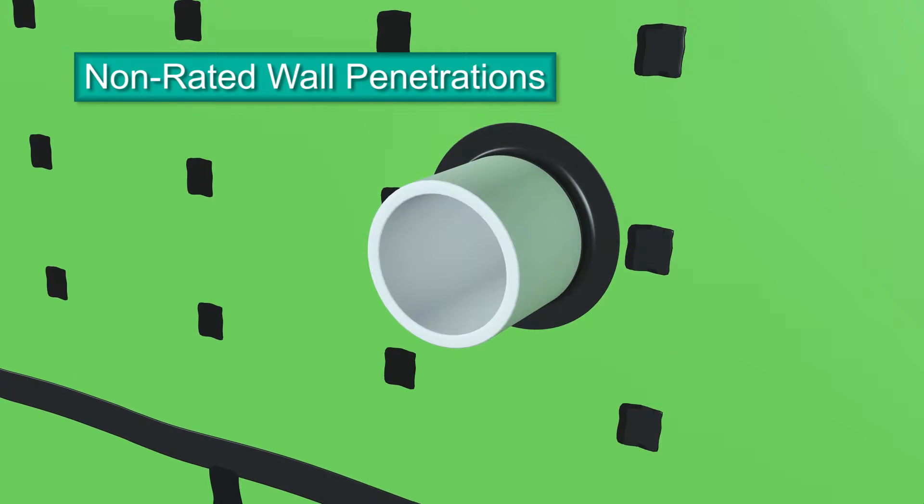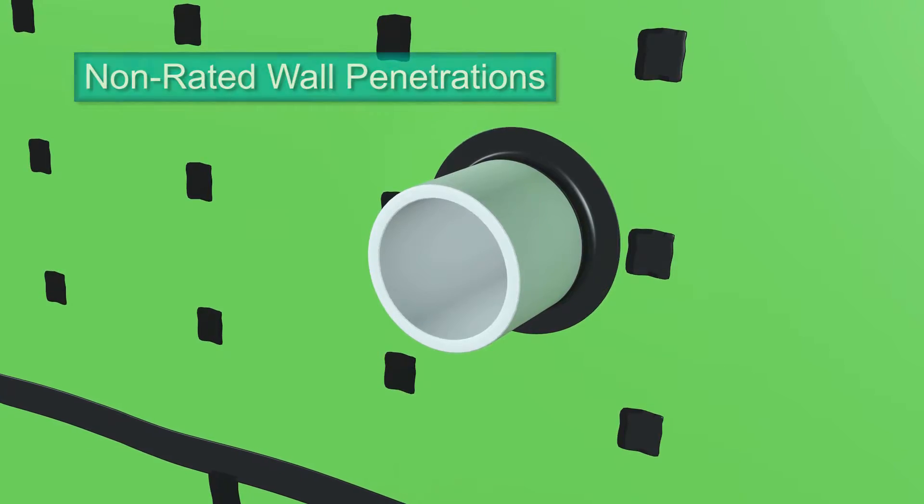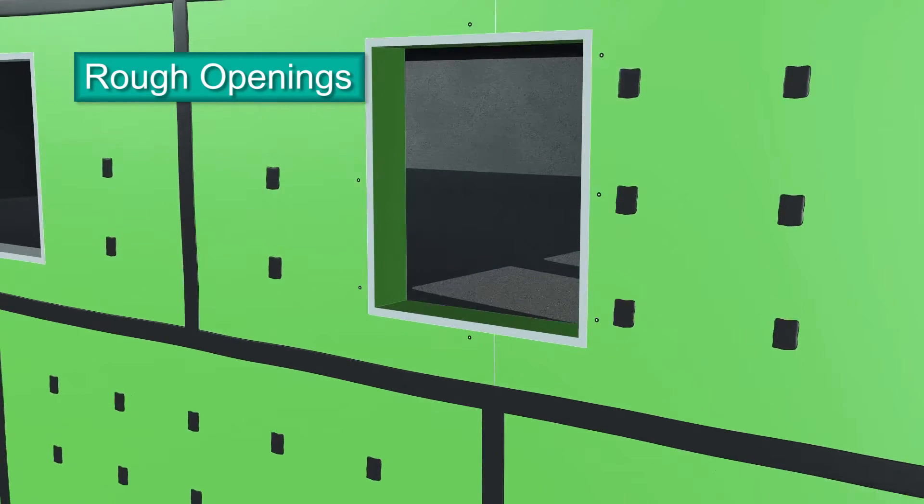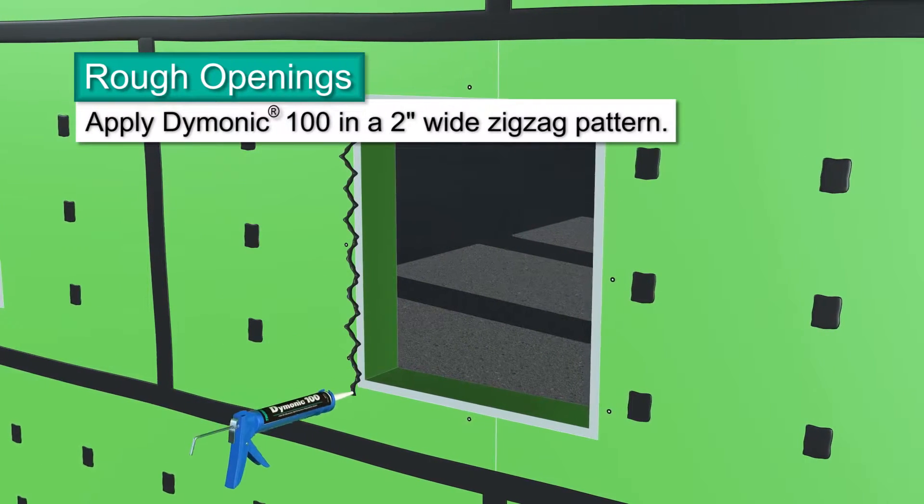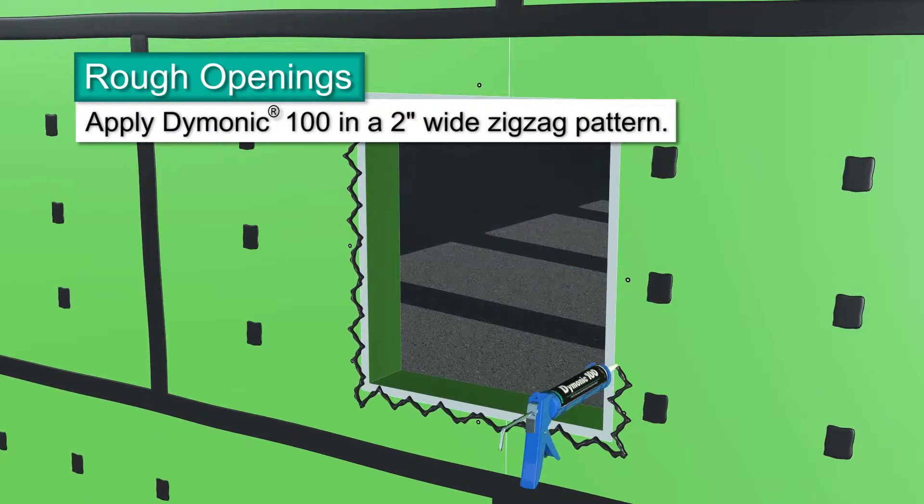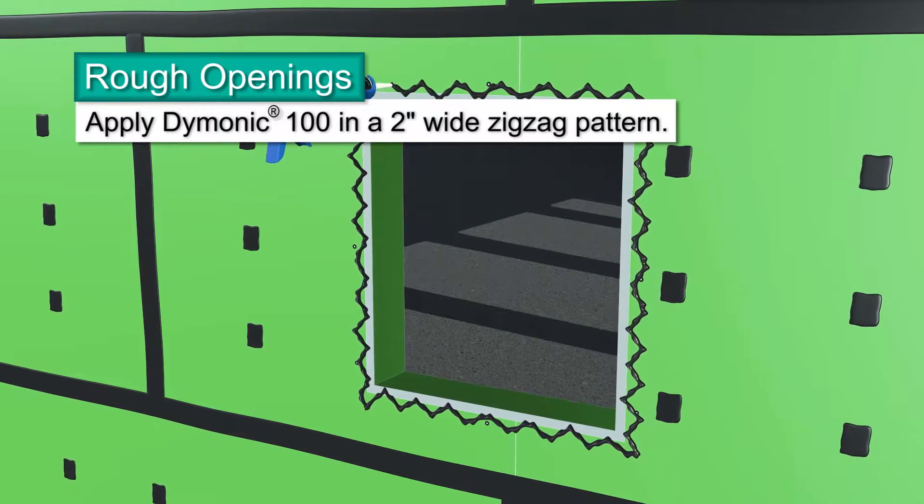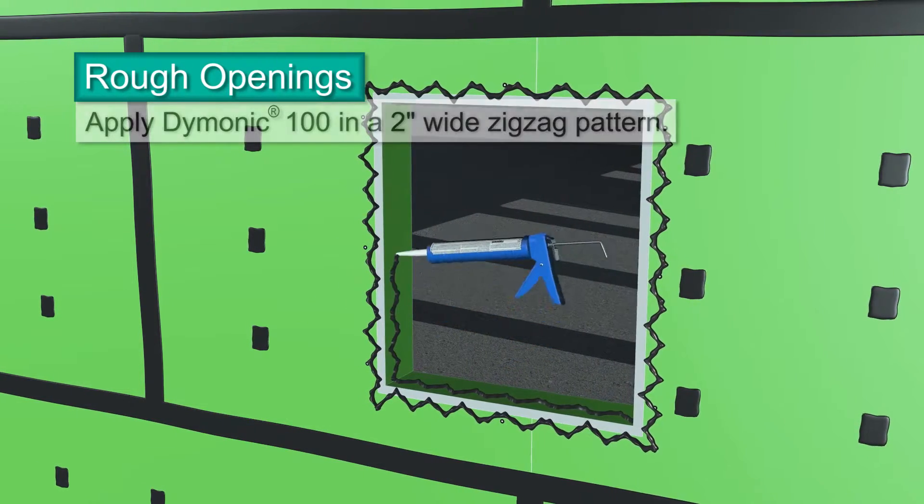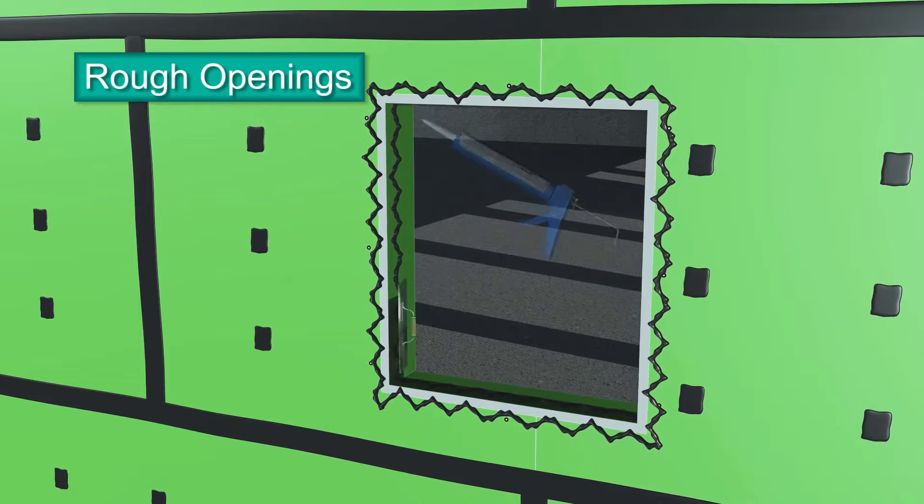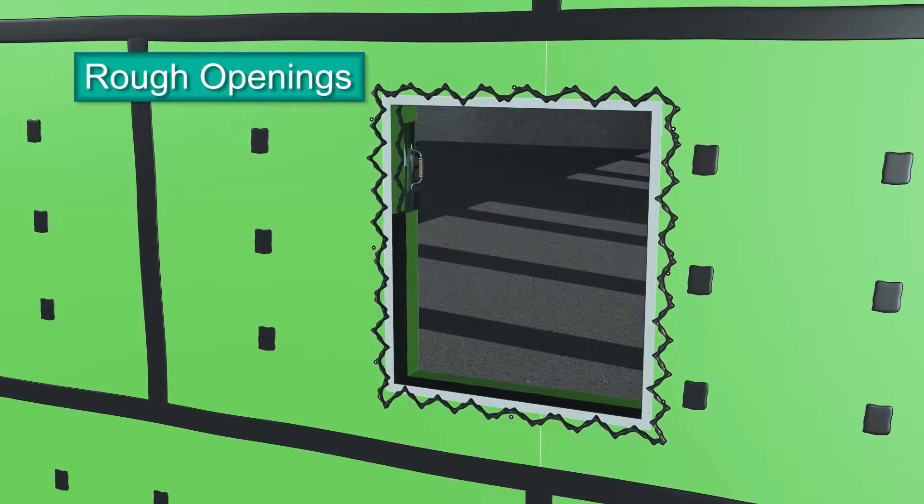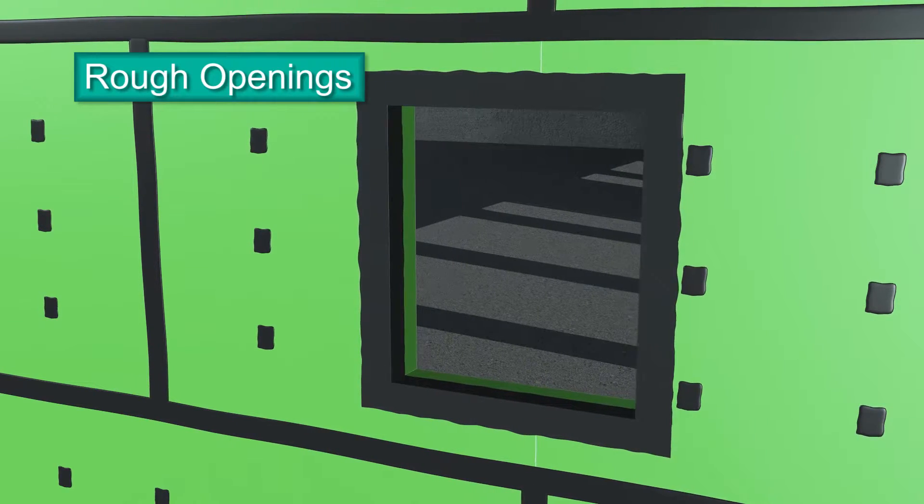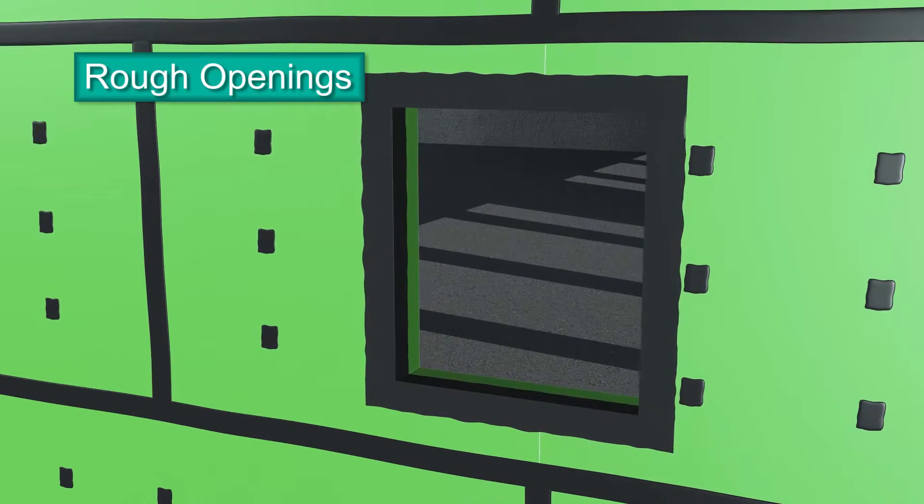Rough openings are detailed in a similar fashion as outside corners. On the face of the exterior sheathing, apply beads of Dimonic 100 sealant in a 2-inch wide zigzag pattern around the perimeter of the panel's rough opening. In the same manner, apply the sealant to the sill, jams and head. Using a trowel, spread the sealant toward and over the corner joints for the sill, jams and head. Feather the outer edges of the sealant's perimeter on the panel's face to remove any thick areas of sealant. Use a mill gauge to make sure you've applied 40 wet mills. If not, reapply more sealant.